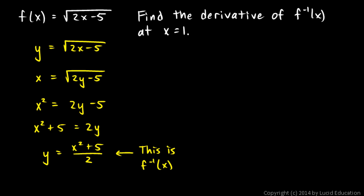We're trying to find the derivative of f inverse at x equals 1. So I'll find y prime. Think of the 2 in the denominator as a constant multiplier of one half, which sticks around when we take the derivative. So we have one half times the derivative of x squared plus 5. The derivative of x squared is 2x, the derivative of 5 is 0, and the 2's cancel. So y prime is just equal to x.